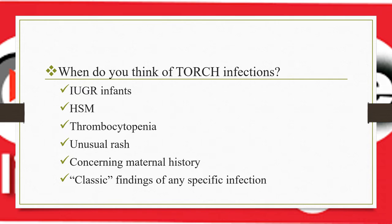When should we think of TORCH infection in the newborn? The main entry points are: when the newborn has IUGR (intrauterine growth retardation), hepatosplenomegaly, unexplained thrombocytopenia, unusual rash, or concerning maternal history — meaning signs or symptoms of any TORCH infection during pregnancy. Also, classic findings such as blueberry muffin, snuffles, or periventricular calcification should prompt consideration.